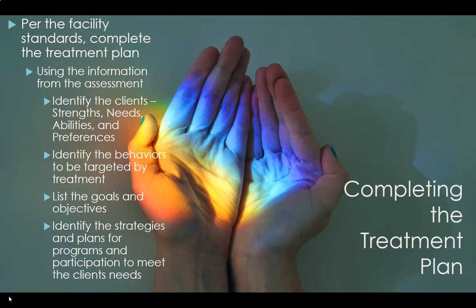Each facility will have a set time frame for completing the treatment plan, and this could also be unit specific. There are two different types of treatment plans. One is interdisciplinary, meaning that all disciplines enter information on the same plan — this type takes more coordination and often has different time frames for completion based on each discipline. Usually a psychologist or social worker initiates the bulk of the plan, after which other team members are alerted to add to it. The second type is called discipline-specific treatment plans, where each separate discipline has their own plan in the chart, typically completed immediately following the assessment. The Shank and Cole chapter 8 reading provides an example of a discipline-specific treatment plan on page 133, and for this class we will be following the discipline-specific treatment plan.